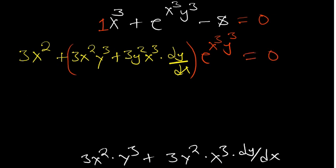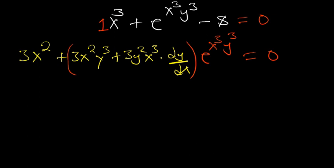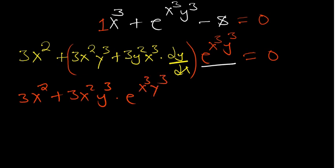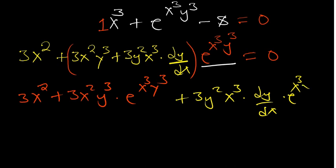When dealing with implicit differentiation, after performing the differentiation you must make dy/dx the subject. We expand to get: 3x²y³ · e^(x³y³) plus 3y²x³ · dy/dx · e^(x³y³) equals zero. Our goal is to isolate the dy/dx terms, so everything else goes to the other side.